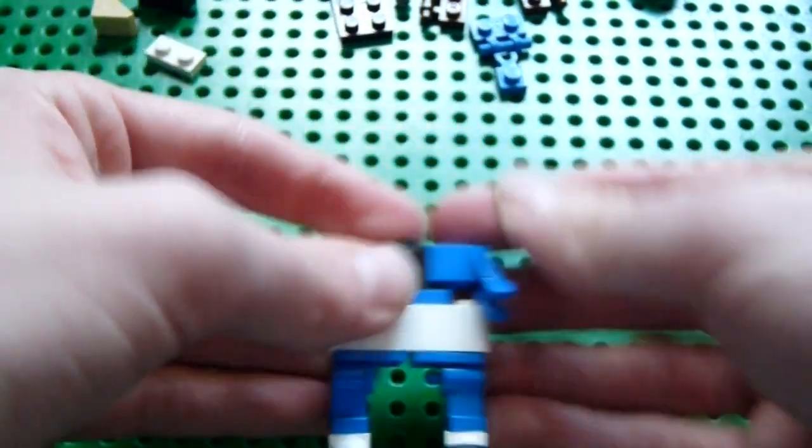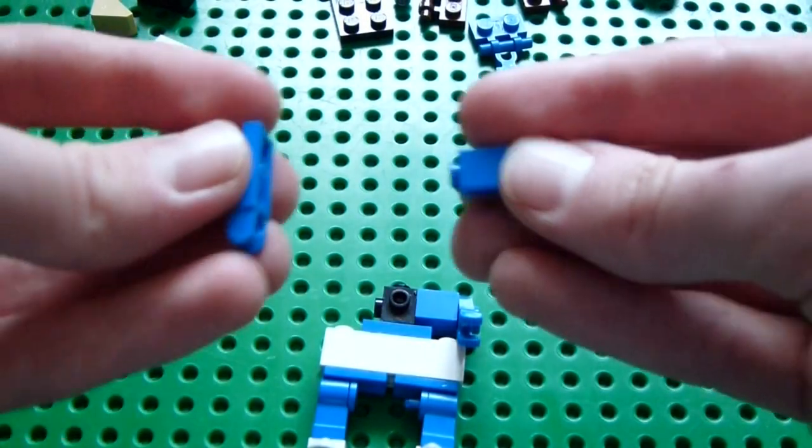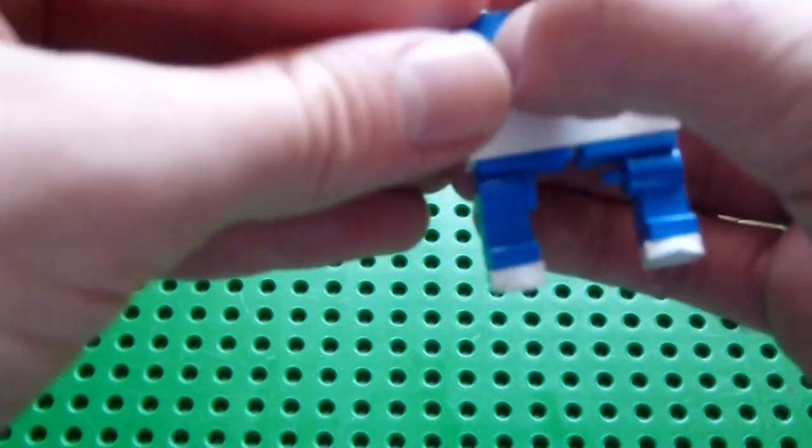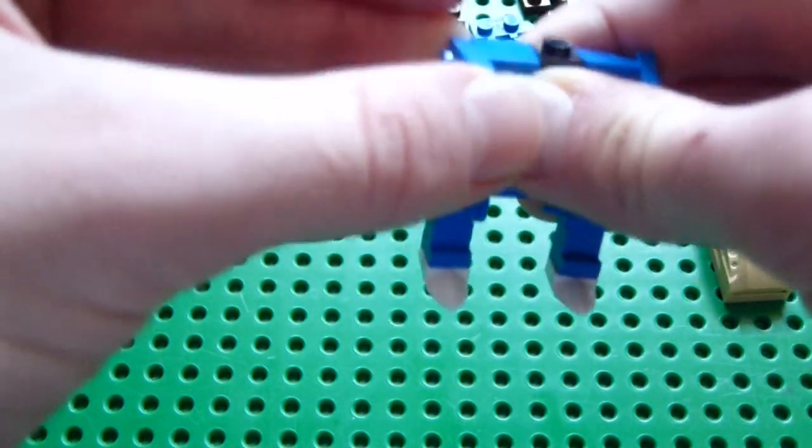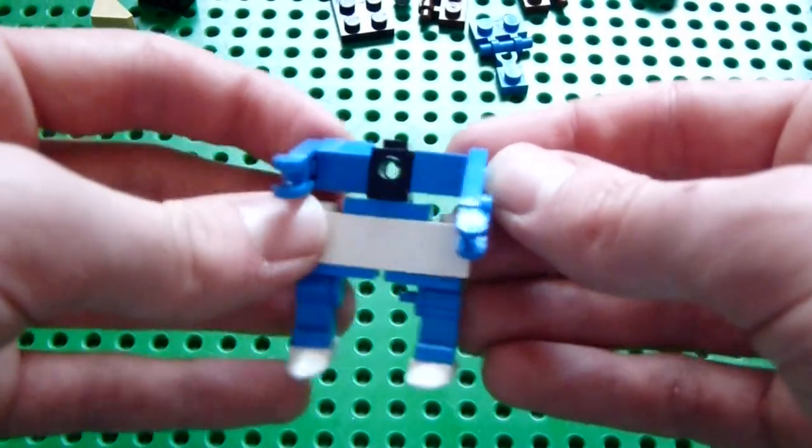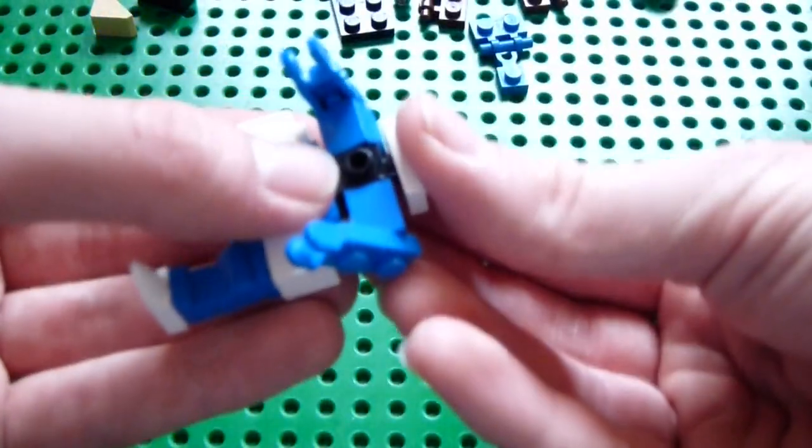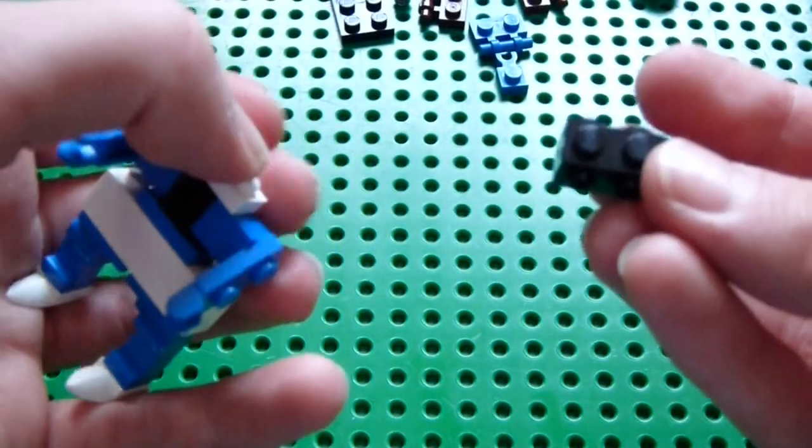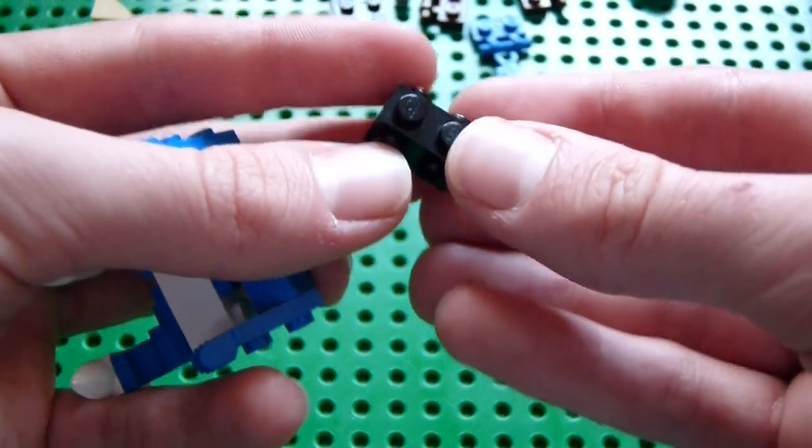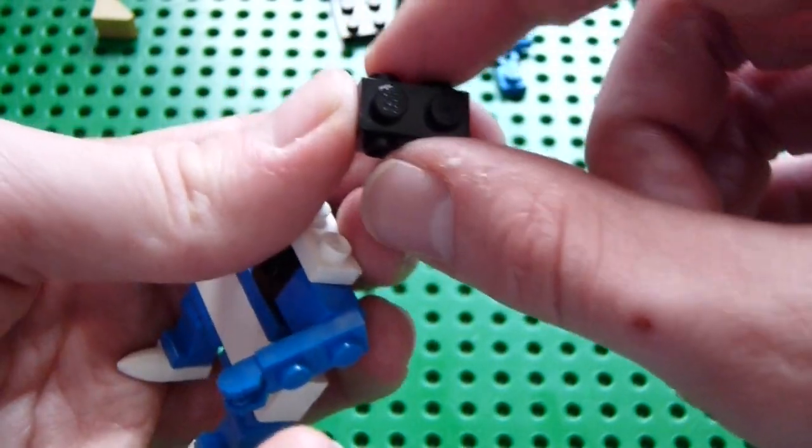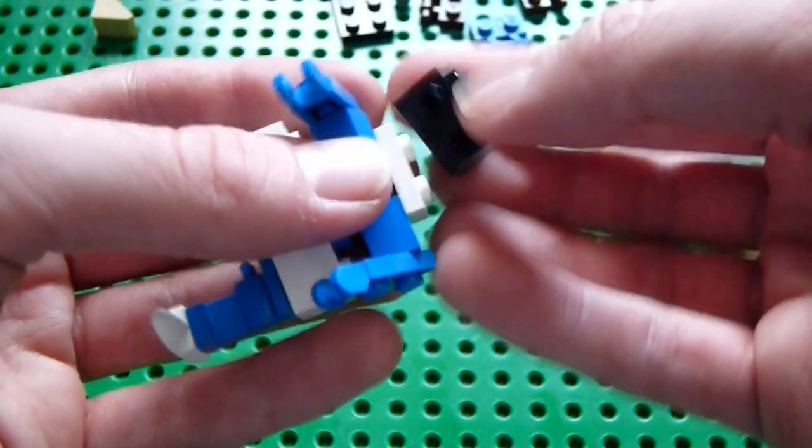On top of that, put a Travis brick. And it really doesn't matter what color. Black works just fine. It doesn't end up being visible. So for the arms, just take a 1x1 brick. And then one of these hinge pieces. The hinge that clicks with the different joints. And stick that onto the sides of the Travis brick. On top of that, put a 2x1 plate. And on top of that, put a 2x1 brick with the studs on the front and back side of the 2 length and nothing on the side. Put that on top.